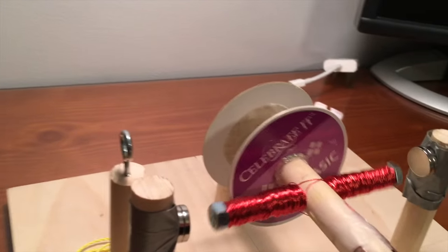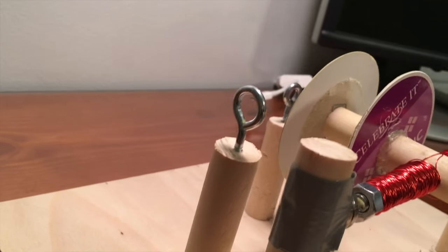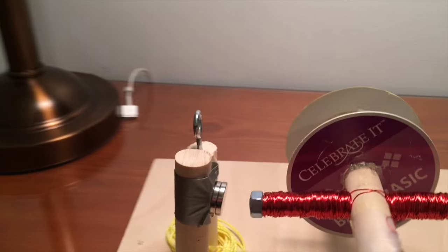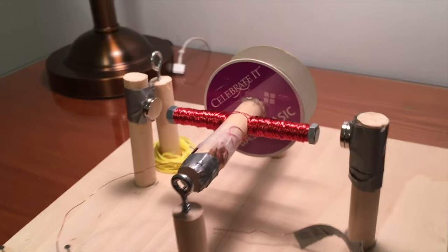We use this spool to store the wound string and this eye bolt to run the string through to make sure that it does not tangle when the motor is running.